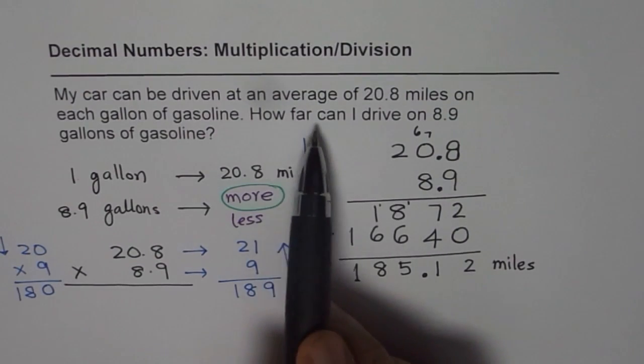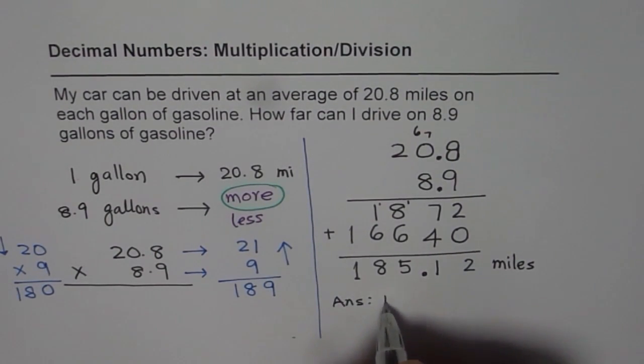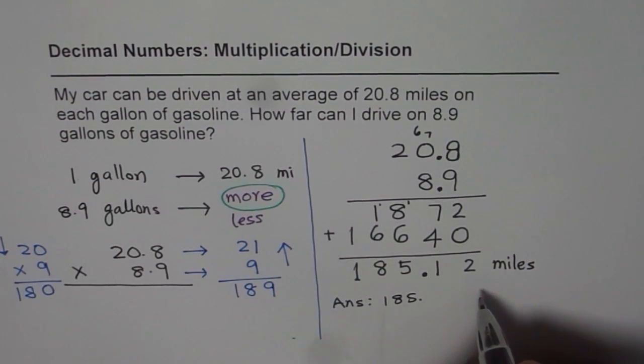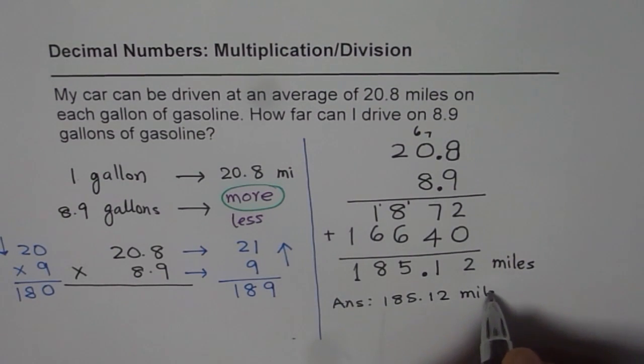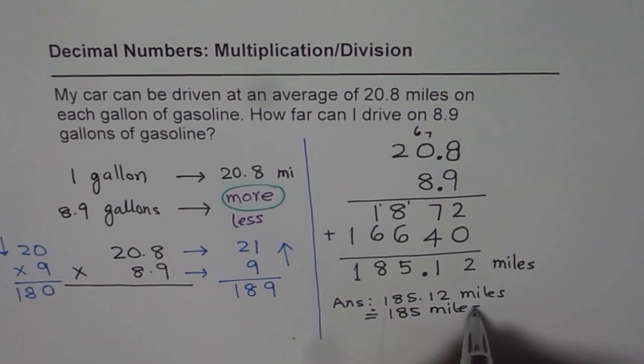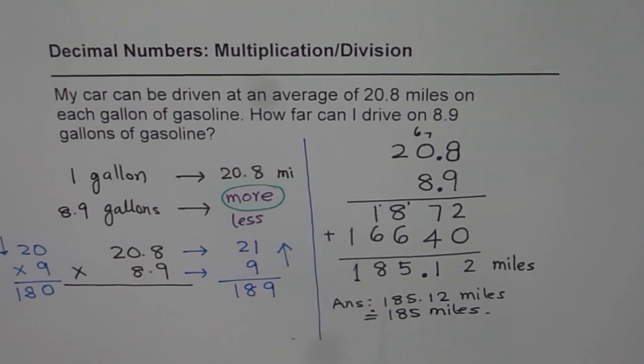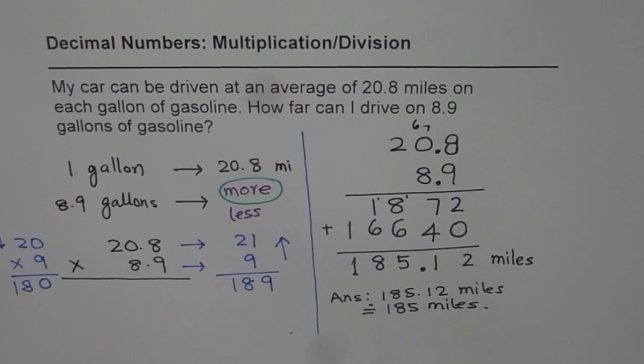And therefore we can write, how far can I drive on 8.9 gallons of gasoline? Well, the answer is 185.12 miles. But when we are talking about miles, 0.12 is kind of, so well, we are learning decimals, so let me write there 0.12 miles to be precise. But we can always say approximately 185 miles. So sometimes you may have to round it after you do all this. In miles, 185 miles. 0.12 we can neglect. So on average we can drive 185 miles in this case. That is our answer.